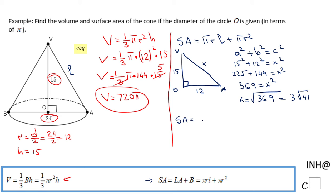That will be π times the radius, which is 12, times the slant height, 3√41, plus π times the radius squared, which is 12². So the surface area will be 3 times 12, that's 36, 36π√41 plus 12² is 144π.